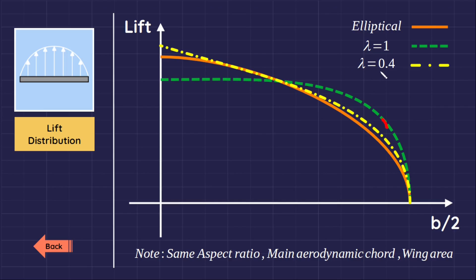We see that the wing with taper ratio of 0.4 has a lift distribution very close to the elliptical one.